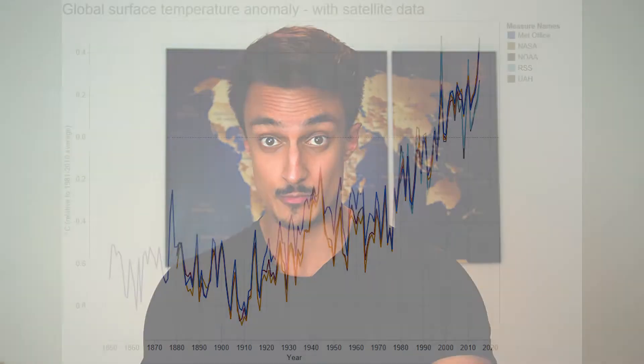And although both the surface and satellite records are imperfect, we can improve our confidence in them by comparing them to each other. And when we do that, they line up pretty well. Sure, it's not perfect, but it's pretty good. So those are the two methods we have for measuring temperature change on the planet, and they both pretty clearly indicate that the Earth is warming.